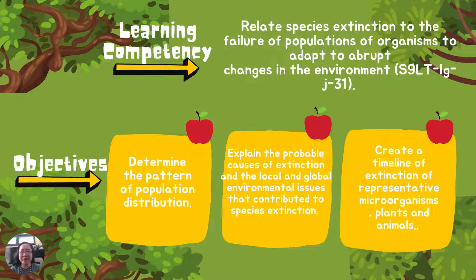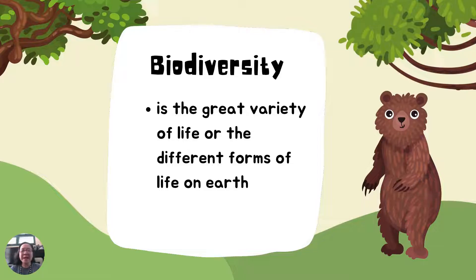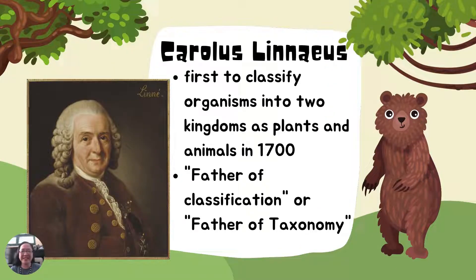Create a timeline of extinction of representative microorganisms, plants, and animals. Biodiversity is the great variety of life, or the different forms of life on Earth.